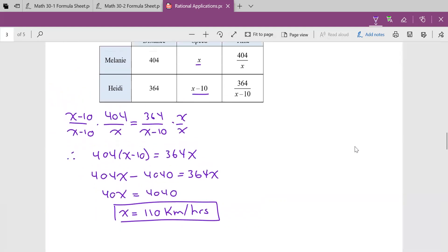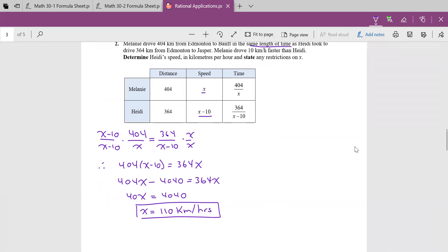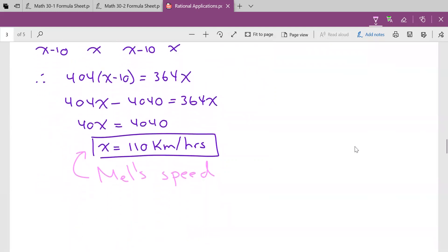Let's always make sure of one thing here. Did I actually answer the question? It sounds like a silly thing to ask, but determine Heidi's speed. No, no, no, no, no. Whose speed is this? This is Melanie's speed. We did not answer the question. And this is where students lose a lot of marks on their diploma because they're not actually answering the question.